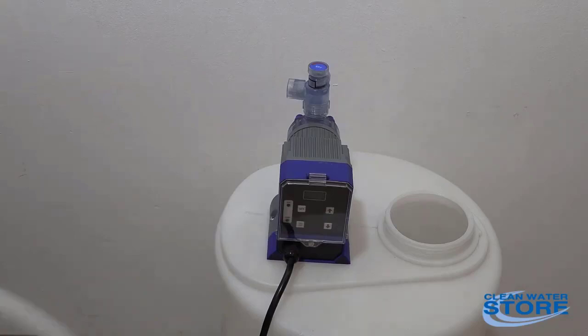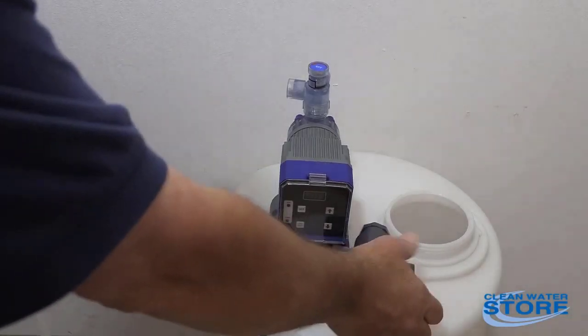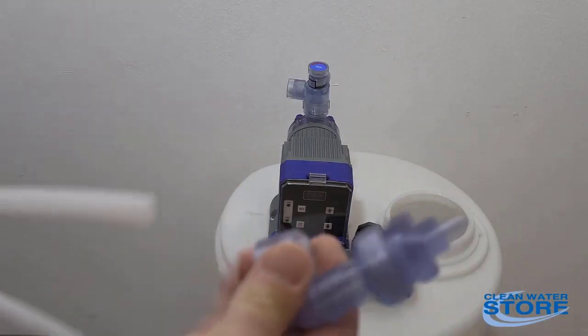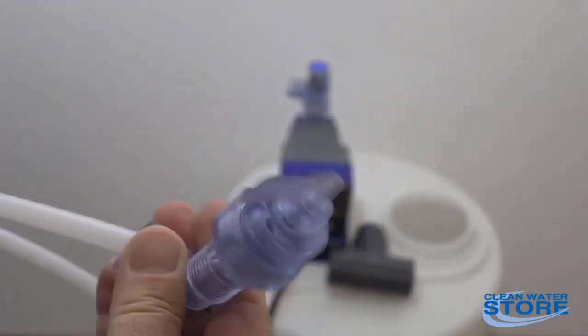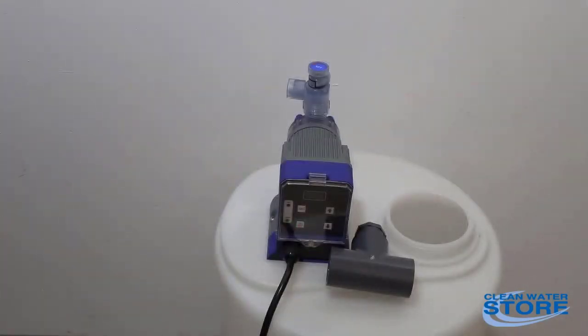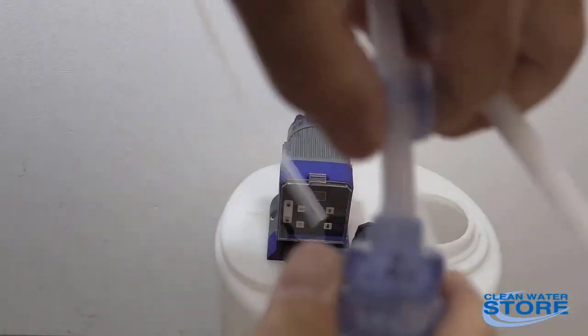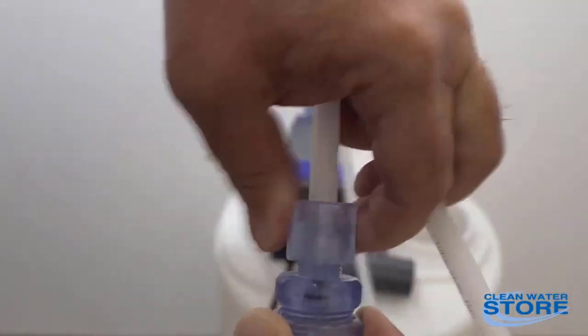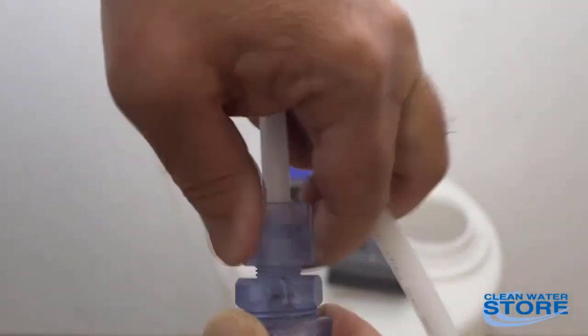So this stiffer tubing is a little harder to go on there, so I just ran some hot water over it. Go ahead and put your cap on first, threads facing out. As you can see, I've got that all the way up against that shoulder there. You want to make sure you hold that there while you're tightening this down. This just needs to be hand tight, and it's important these get a good seal on them.